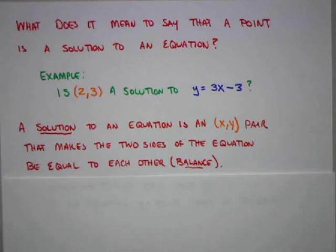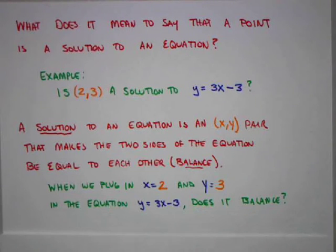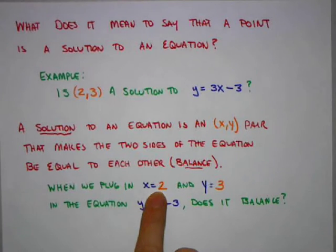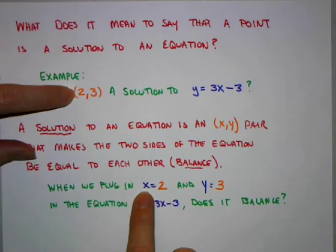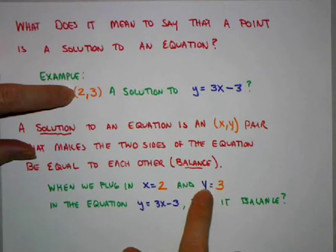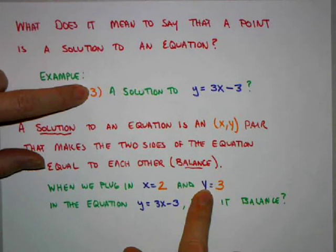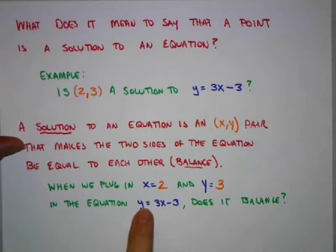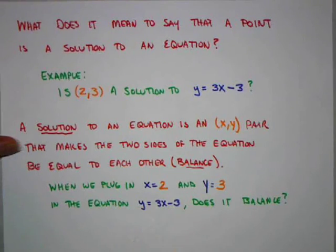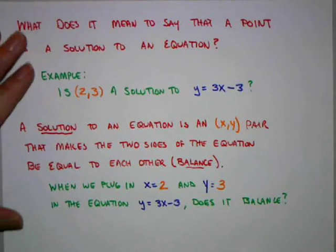So what the example problem is really asking is: when we plug in 2 for x (the x-coordinate of our original point) and 3 for y (the y-coordinate of our original point) into this equation, does it make the two sides of the equation—y on the left and 3x - 3 on the right—equal to each other?